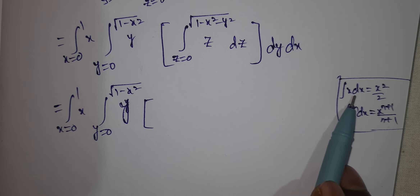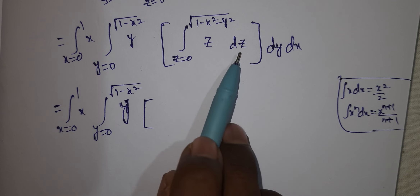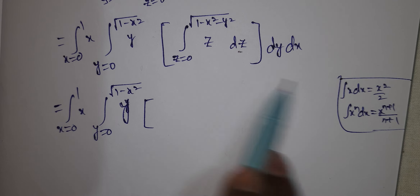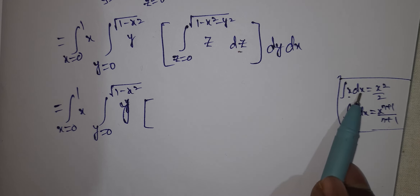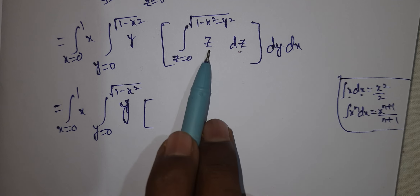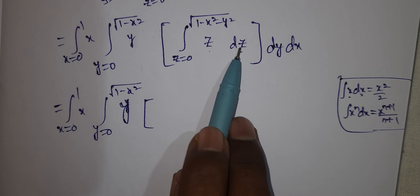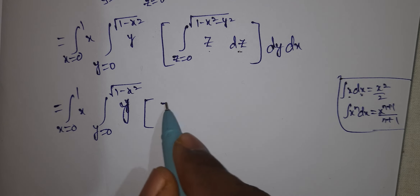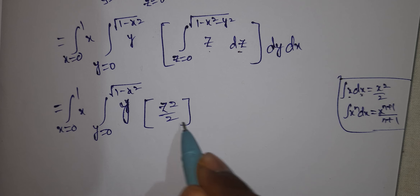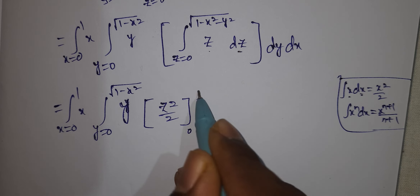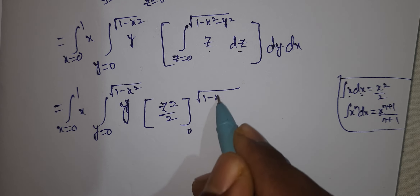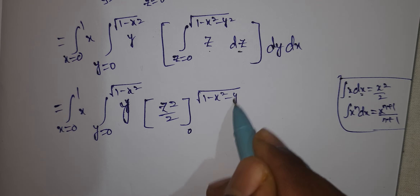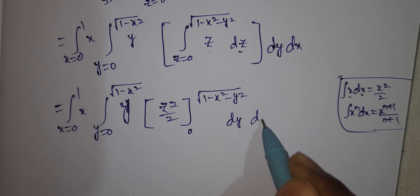Why do we integrate with respect to z first? Here z has power 1. Integrating z with respect to z gives z²/2. So integrating z dz gives z²/2, evaluated from 0 to √(1-x²-y²), into dy dx.